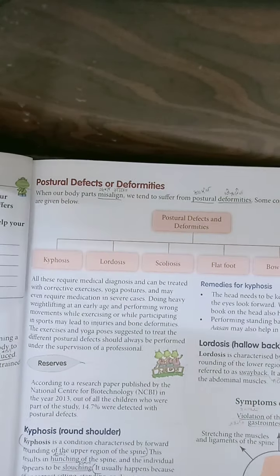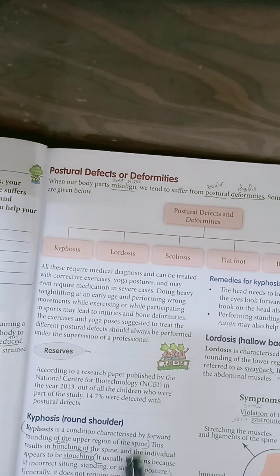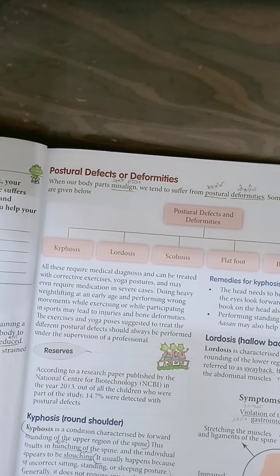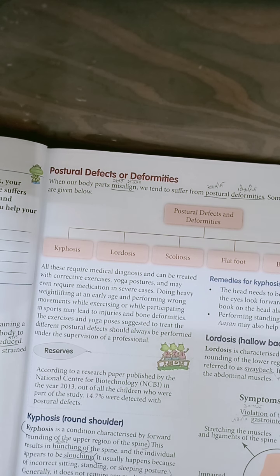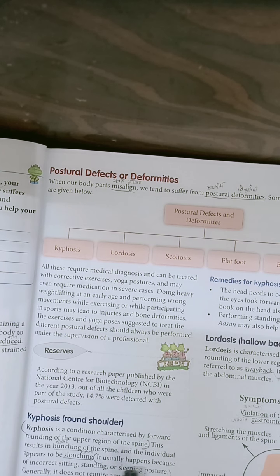Kyphosis — you may know it as 'kubar' — is a condition characterized by excessive rounding of the upper region of the spine. You can see in this image how kyphosis affects the upper region of the spine, giving it a rounded appearance.